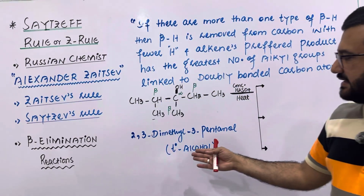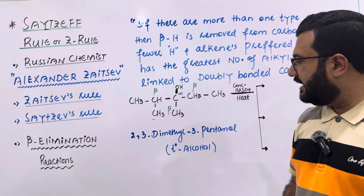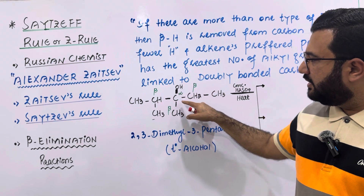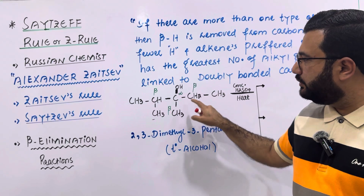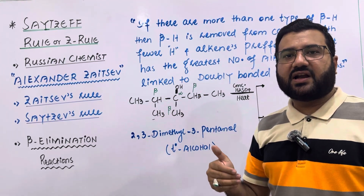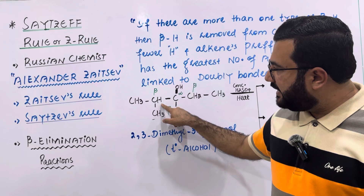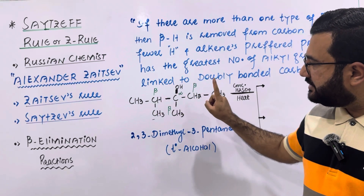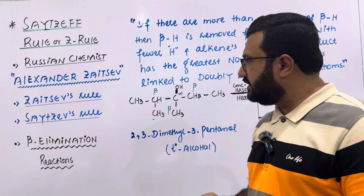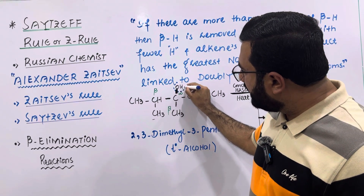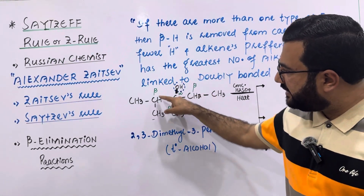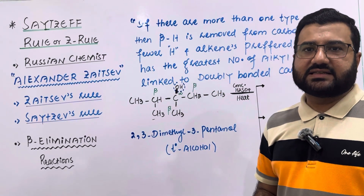For example, consider a tertiary alcohol which is 2,3-dimethyl-3-pentanol. In this alcohol, the carbon which has the functional group is the alpha carbon. This alpha carbon is directly bonded to 3 beta carbons, and they are different with respect to their hydrogen content. This beta carbon has only 1 hydrogen atom, this beta carbon has 2 hydrogen atoms, and this beta carbon has 3 hydrogen atoms. In the dehydration of alcohols, the alpha carbon loses the functional group and the beta carbon loses a hydrogen atom. Which beta carbon should lose hydrogen will be governed by the Zaitsev rule.